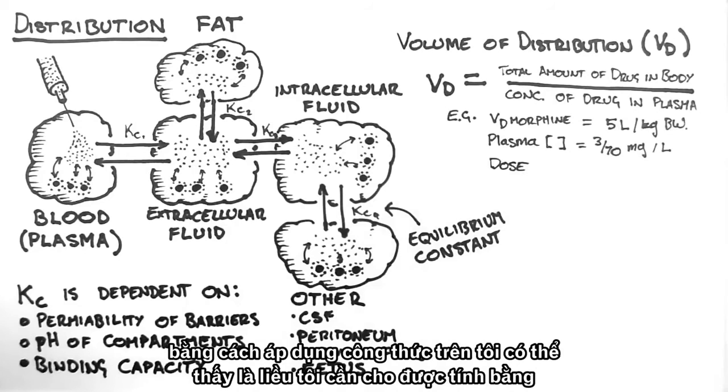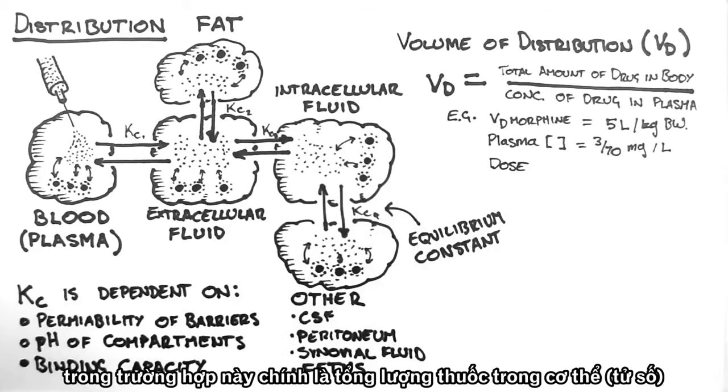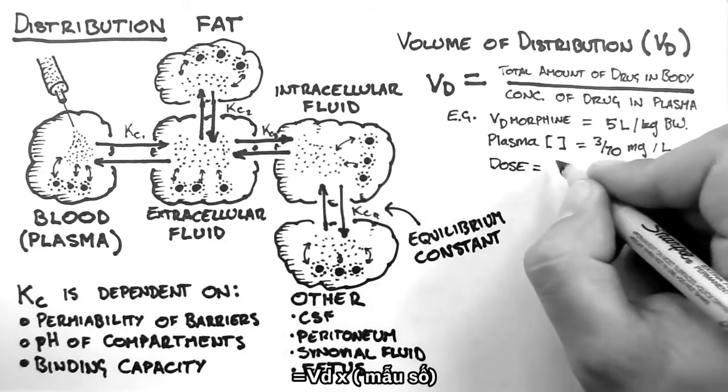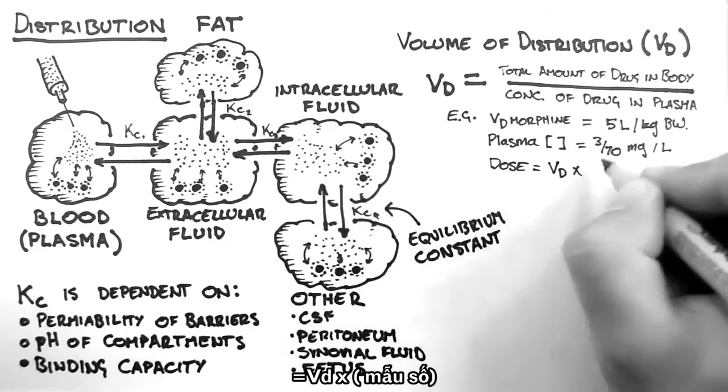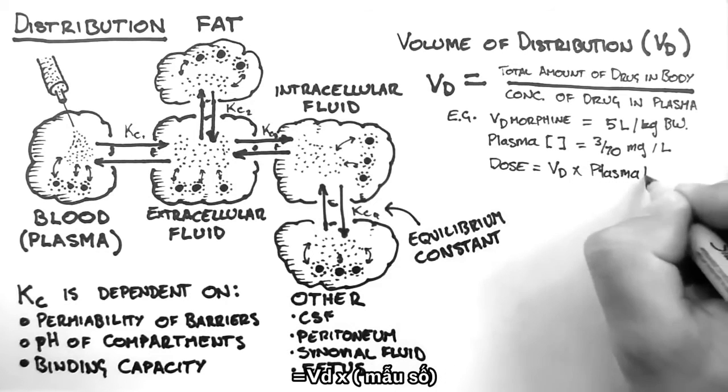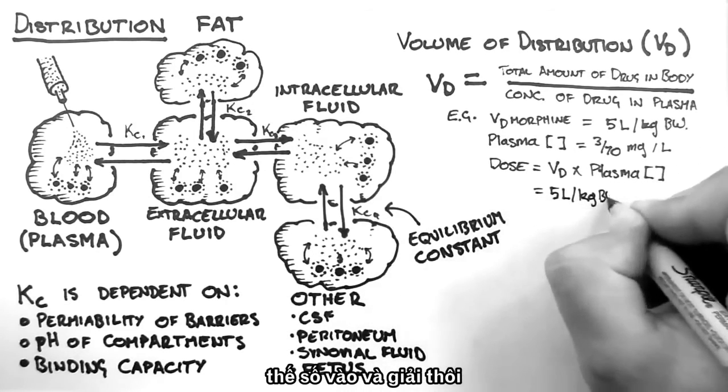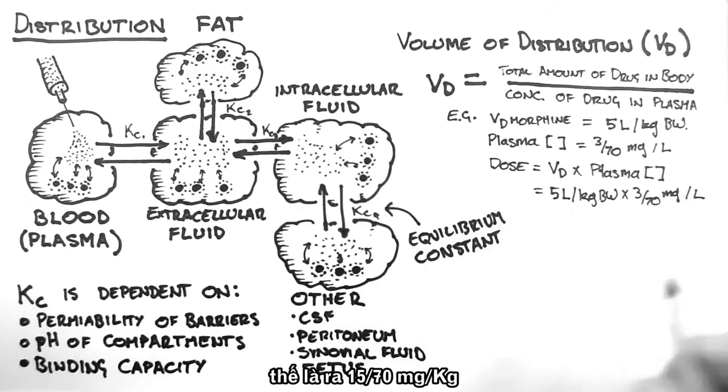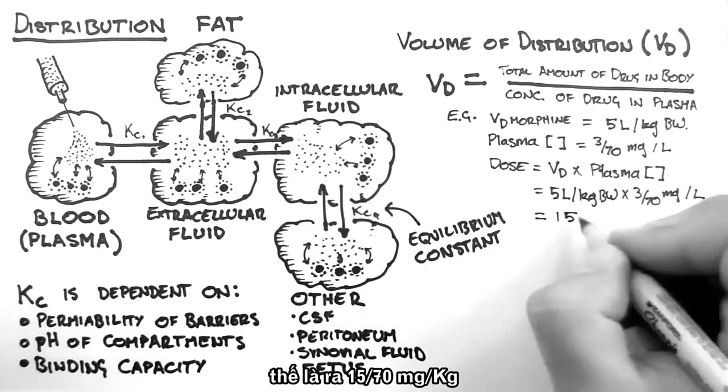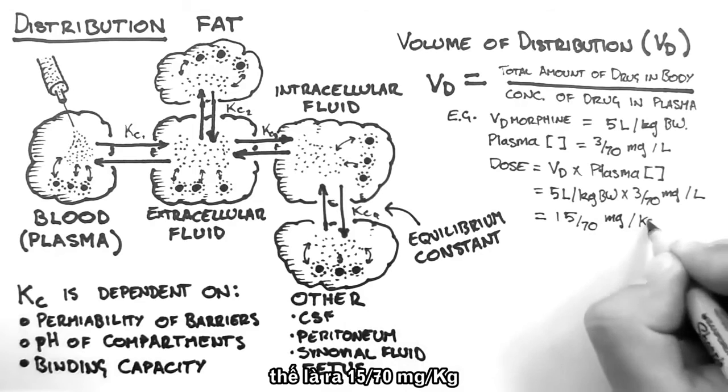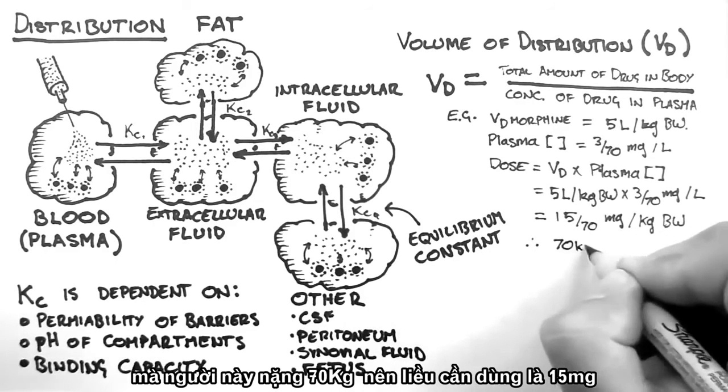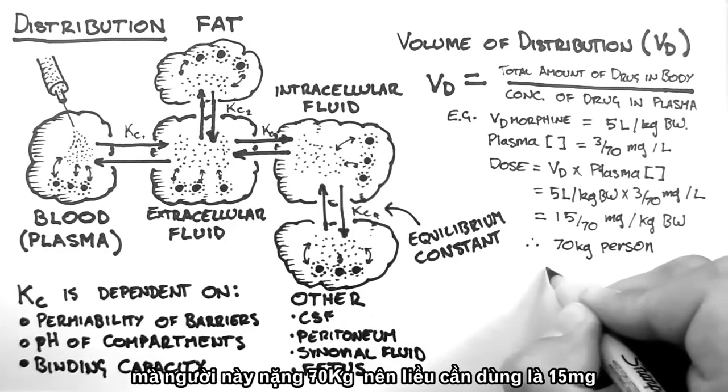Well, by rearranging the above formula, I can see that the dose I need to give, which in this case is the same as the total amount of drug in the body, is the volume of distribution times the desired plasma concentration. Substituting in the numbers and solving shows that I need 15/70th of a milligram for every kilogram of body weight. Therefore, for a 70 kilogram person, I need a dose of 15 milligrams.